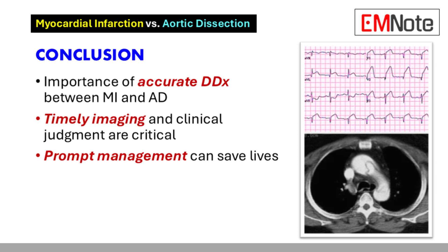Conclusion: Accurate differentiation between myocardial infarction and aortic dissection is essential for appropriate management. A high index of suspicion, prompt ECG, and timely imaging, such as aortic CT, are necessary for confirming the diagnosis and initiating treatment.